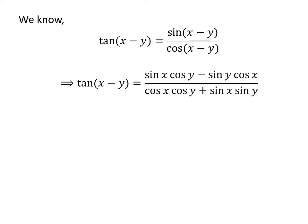We know sine of x minus y is equal to sine of x times cosine of y minus cosine of x times sine of y. And cosine of x minus y is equal to cosine of x times cosine of y plus sine of x times sine of y.